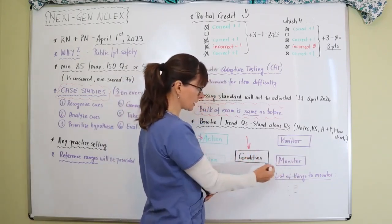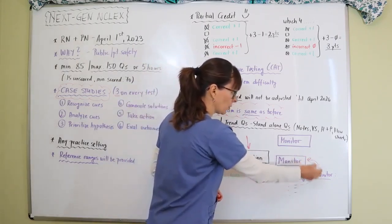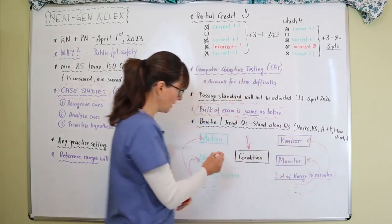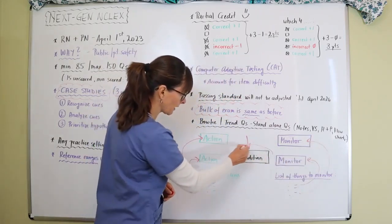And the same thing with the list of things to monitor. So you're going to read through this list of things to monitor, whatever applies to the condition that they give you, you're going to fill these in right here. And then this looks like a bow tie.